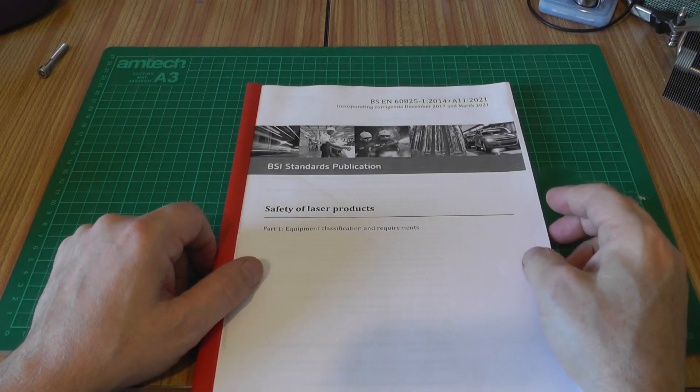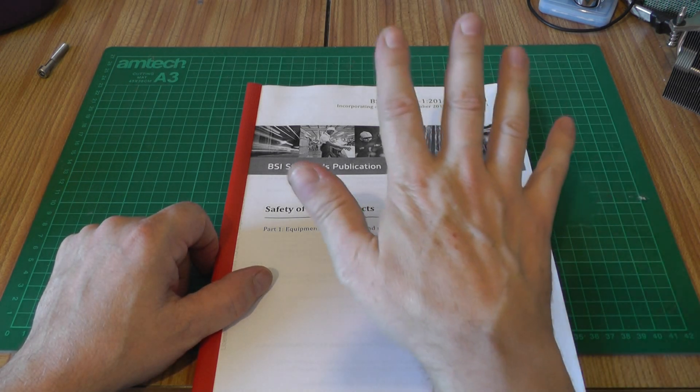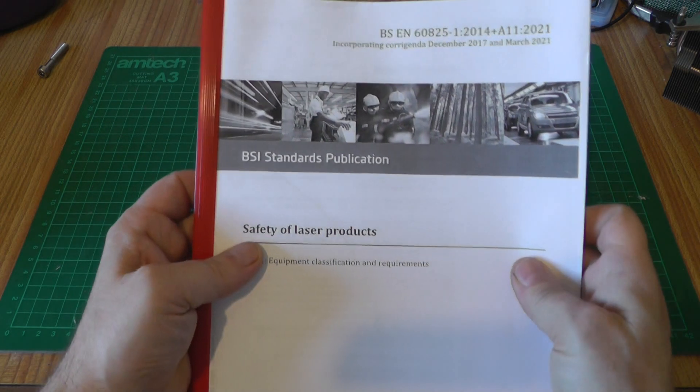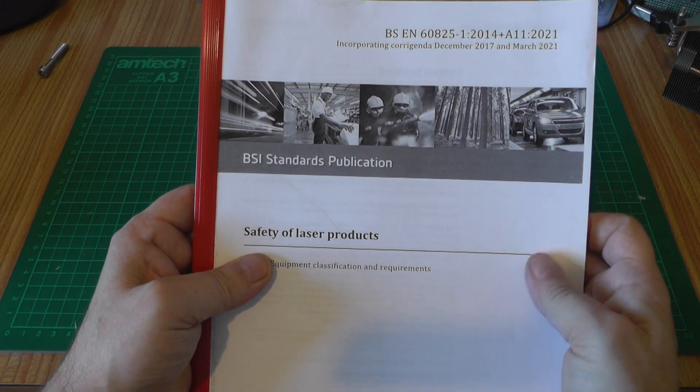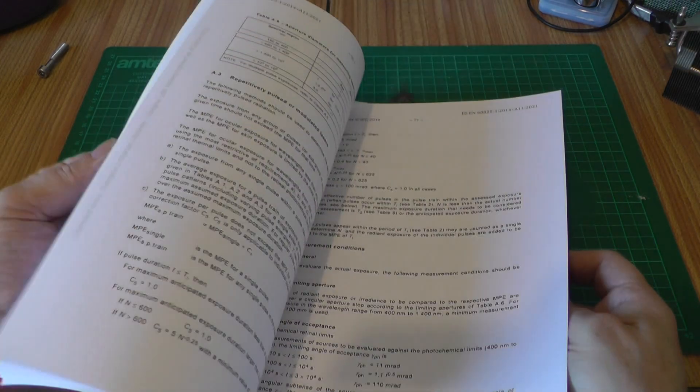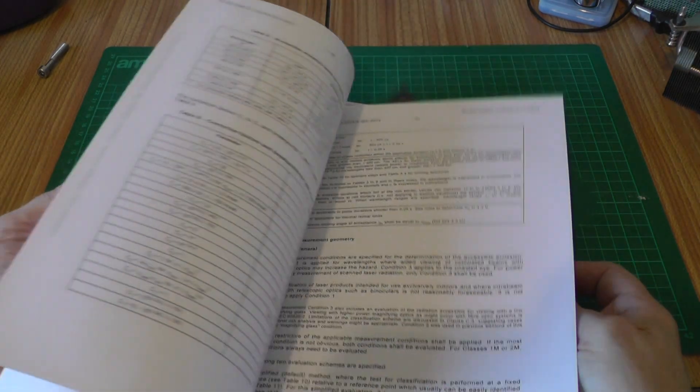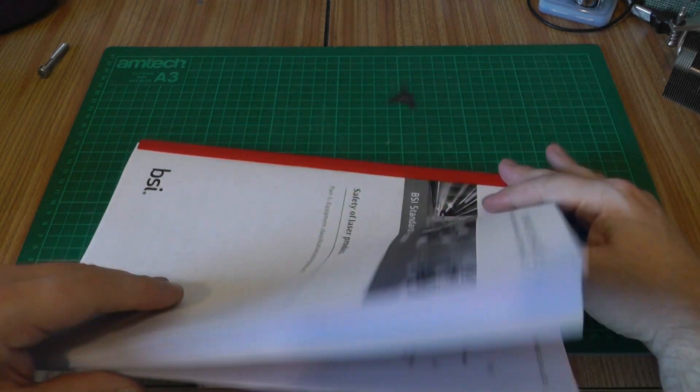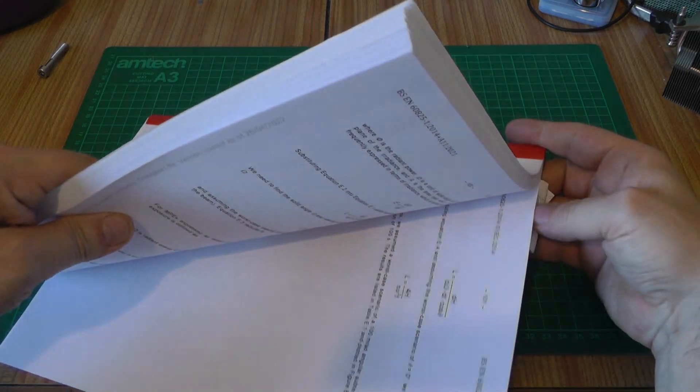When I contacted the Health and Security Agency in the UK, a very nice fellow suggested that I get hold of this. This is BSEN 60825. This is the safety of laser products manual. It's quite long, 140 pages, but well worth a read if this is something that you're interested in. On a page down at the back here, it has some specifications for the power supply.